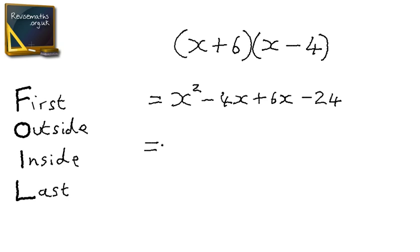Now to simplify, we have x squared. We have minus 4x plus 6x, which is plus 2x, and we finish with minus 24.